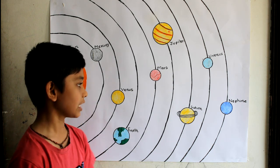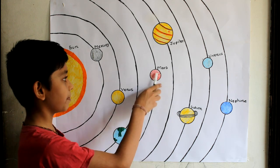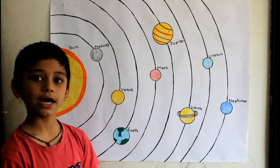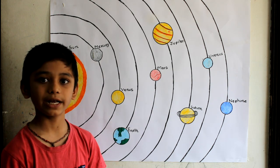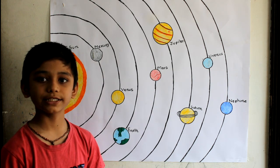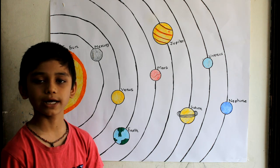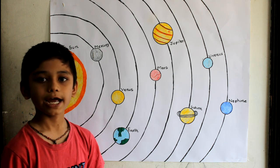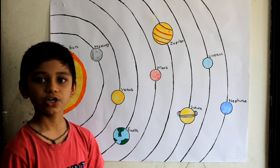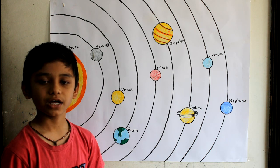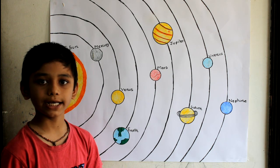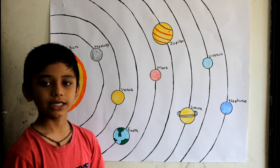Now let us see about Mars. Mars is also called the red planet. It is the second smallest planet in our solar system and it has two moons. Their names are Phobos and Deimos.